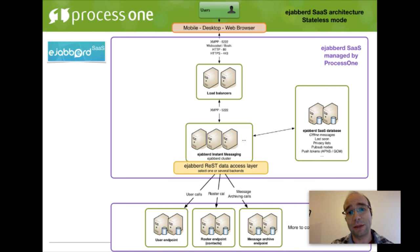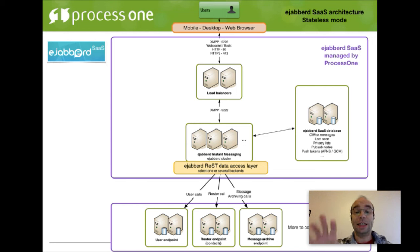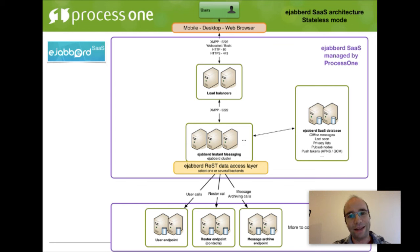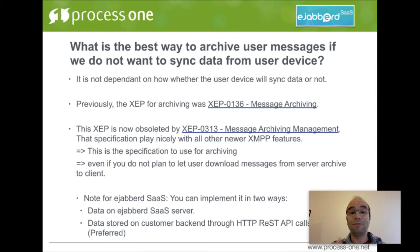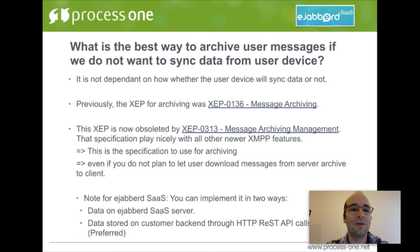You can decide what you want: use authentication on your backend while letting us manage roster and message archive, or manage all three — user, roster, and message archive yourself. As a consequence, the EJABBERD SaaS database contains much less persistent data. We are already adding a REST API so you can store offline messages on your own backend too, moving more and more data to your side so you are in control with more flexibility.